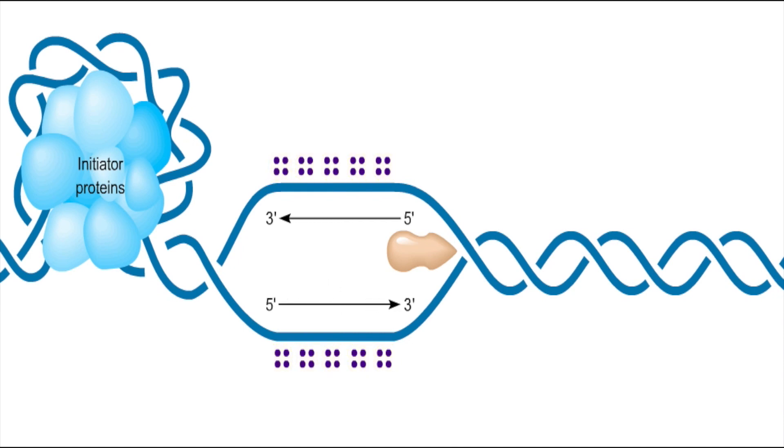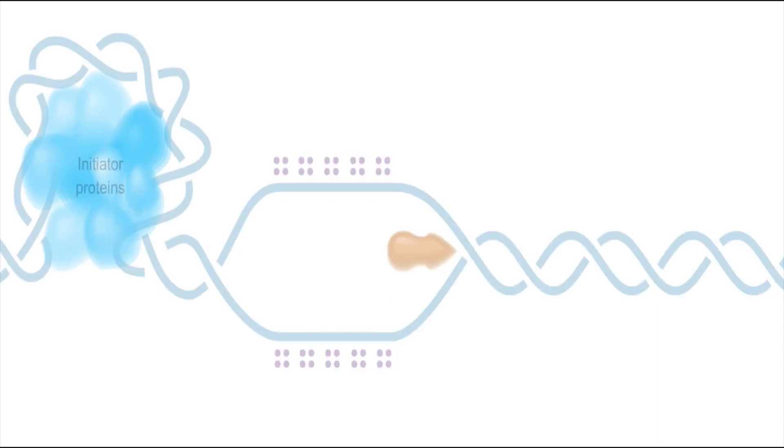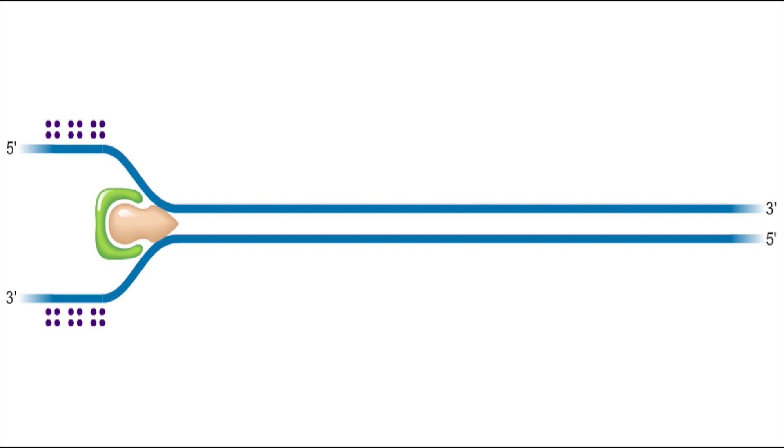Since the template strands are anti-parallel and new DNA is made in the five-prime to three-prime direction, the process of chain elongation occurs differently on the two strands. For example, let's look at the replication fork in an E. coli chromosome.